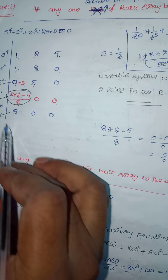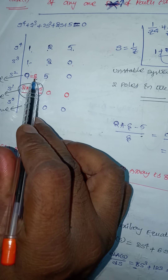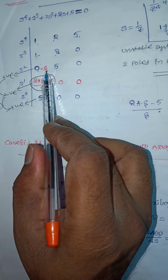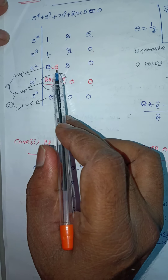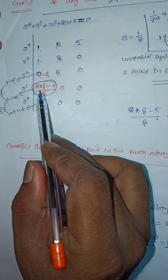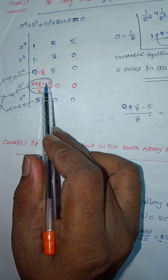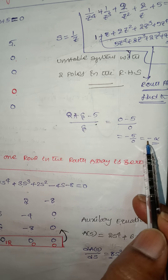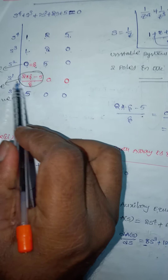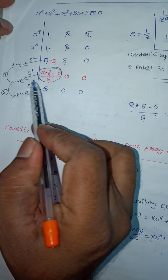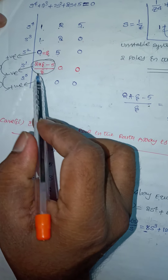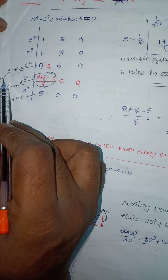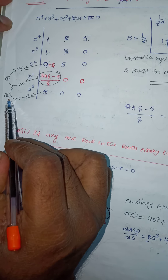After calculating this first column of the array by replacing 0 with epsilon, now substitute the value of epsilon equal to 0. So it is 0 — no problem with this. Next, 2 into 0 is 0, minus 5 divided by 0, so minus 5 divided by 0 equals minus infinity. So the signs are: positive, negative, positive, positive — meaning there are 2 sign changes.